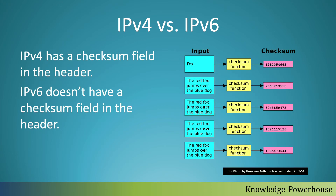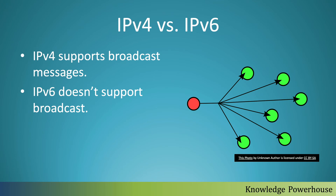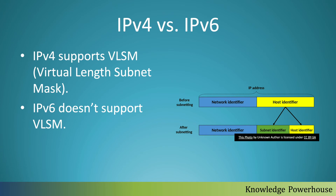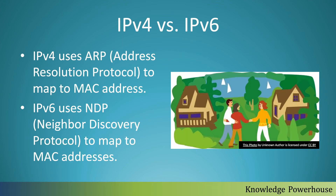In IPv4 there is a checksum field in the header, but IPv6 does not have a checksum field, which improves efficiency. IPv4 supports broadcast messages, but IPv6 does not support broadcast. IPv4 also supports VLSM — virtual length subnet mask — which is used to identify network membership quickly, whereas IPv6 does not support VLSM.